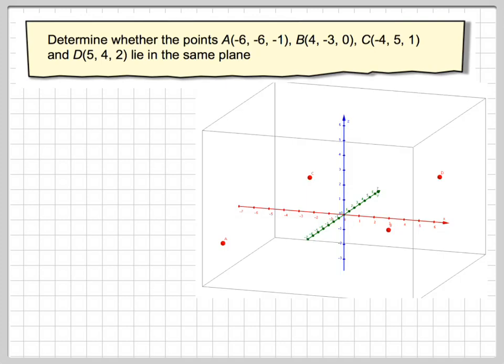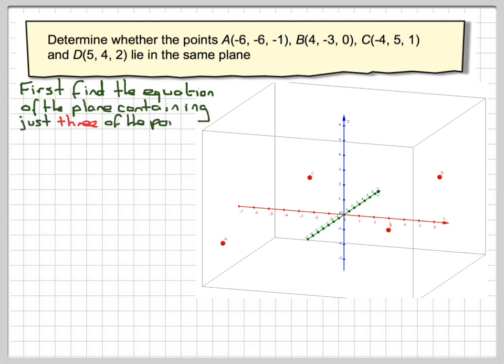So there's that diagram. So first, find the equation of the plane containing just three of the points. So we're going to take A, B, and C. So labeling up my diagram a little bit. This is point A. This is point B. Point C. This is point D.